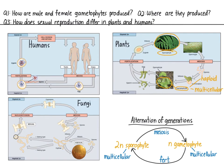But in flowering plants, as we'll see in a bit, the gametophytes are made of only a few cells, which for most of their development exist within the larger sporophyte. They have what we call reduced gametophytes, because the gametophytes are smaller compared with other non-flowering plants.